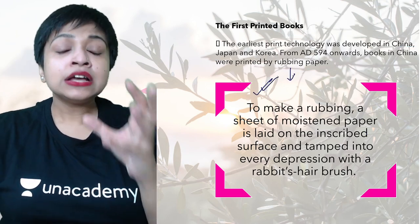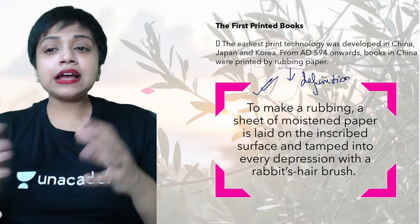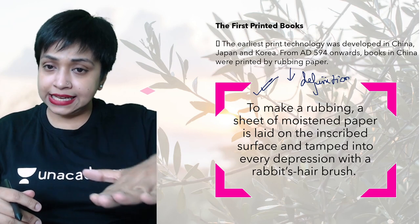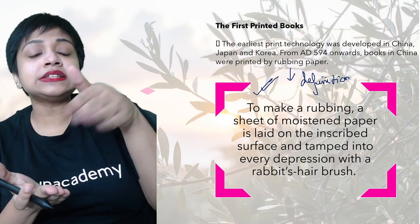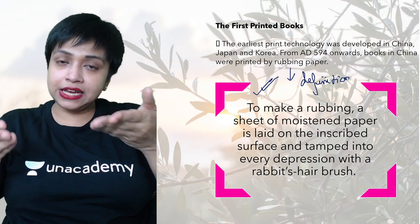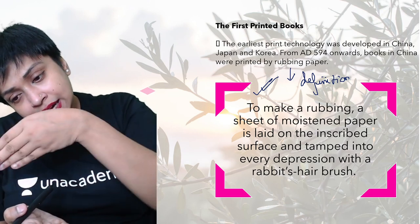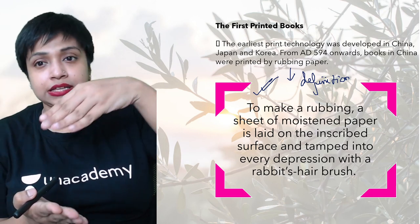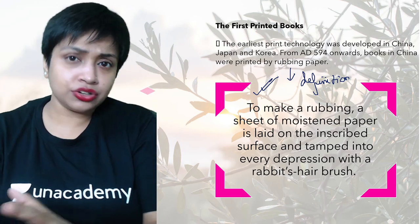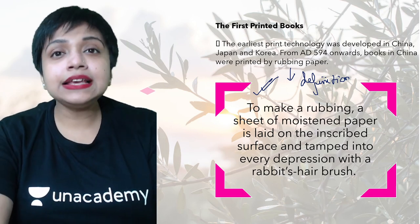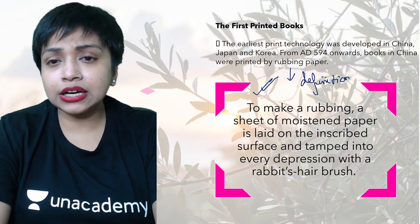Rubbing paper technology is not defined in your NCERT textbook, so I have added the definition: to make a rubbing, a sheet of moist paper is laid on the inscribed surface and packed into every depression with a rabbit's hair brush. Essentially, a moist sheet is pressed under inscribed blocks. This was definitely a time-consuming and not very fast process.